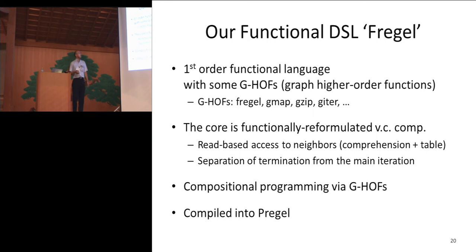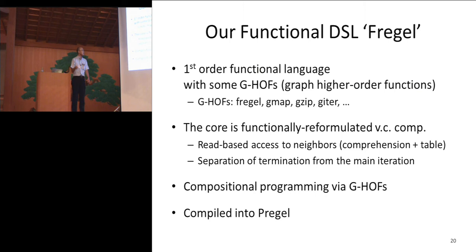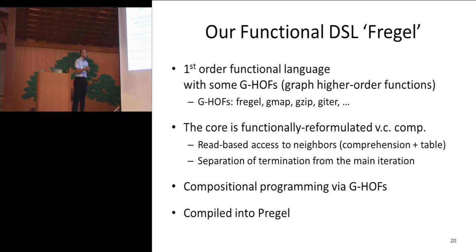Fregel is a first-order function language with some graph higher-order functions such as Fregel, Map, Zip, and so on. Its core computation is a functionally reformulated vertex-centric computation. You can use read-based access to neighbors, and it separates the termination from the main iteration, making the program easy to understand. Since it provides higher-order functions, you can use these functions to make your program in a compositional way, supporting compositional programming. Once you write a program in Fregel, the compiler can compile it to the existing framework, PreGEL.